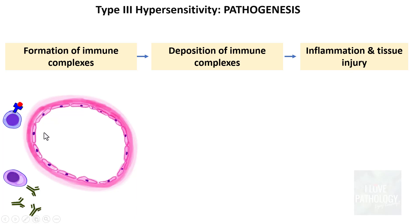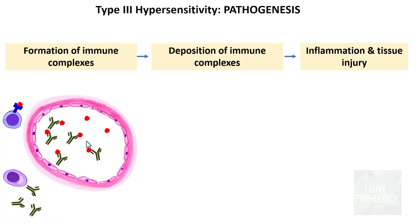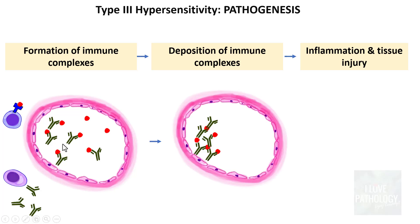Upon exposure to a particular antigen, B lymphocytes are programmed to convert into plasma cells, which synthesize large amounts of antibodies against that antigen. When an individual is exposed to a large amount of antigen, many of these free-floating or soluble antigens circulating in the blood react with the already-produced antibodies, forming antigen-antibody complexes — or immune complexes — in circulation. The most pathogenic immune complexes are those of medium size.